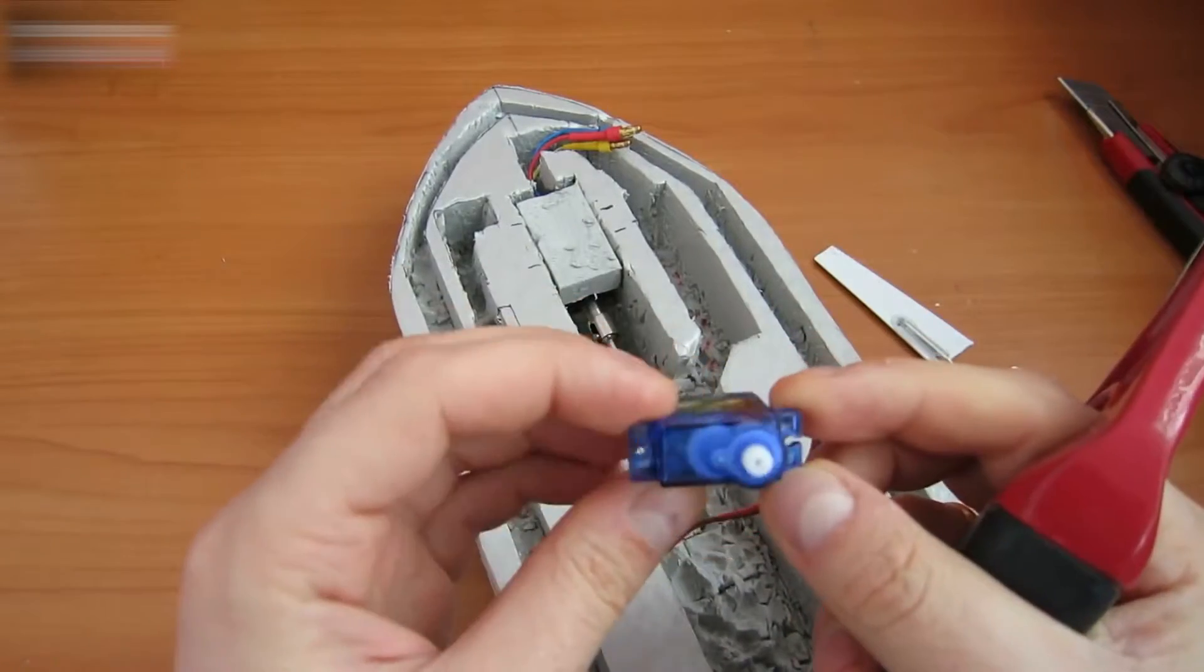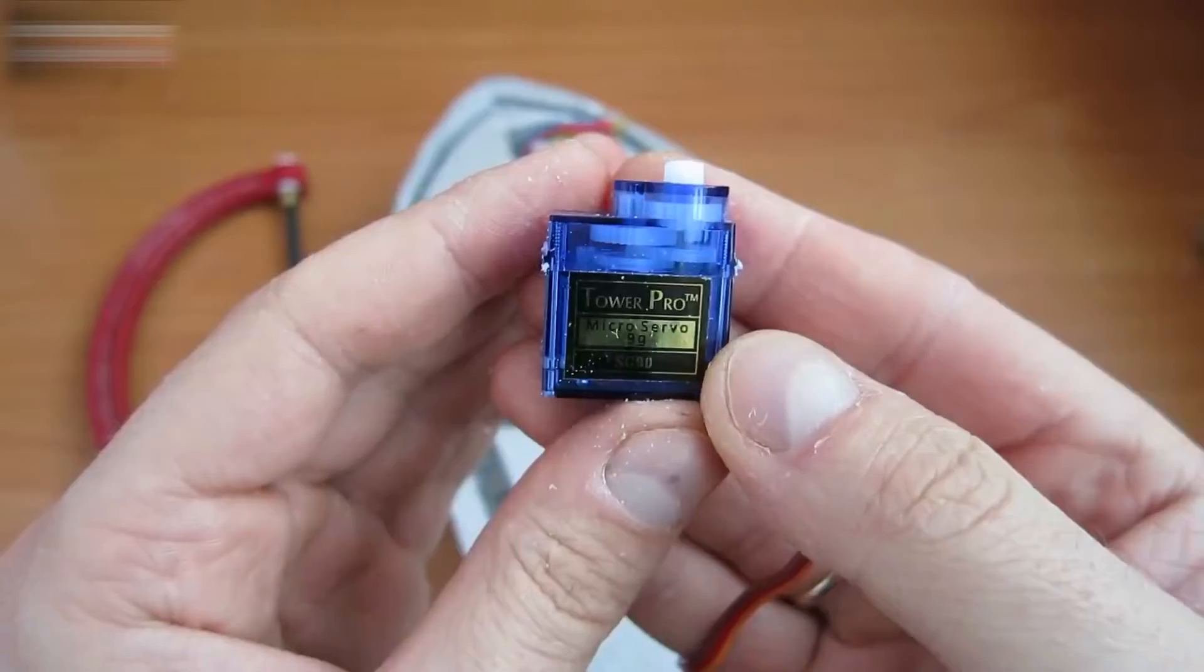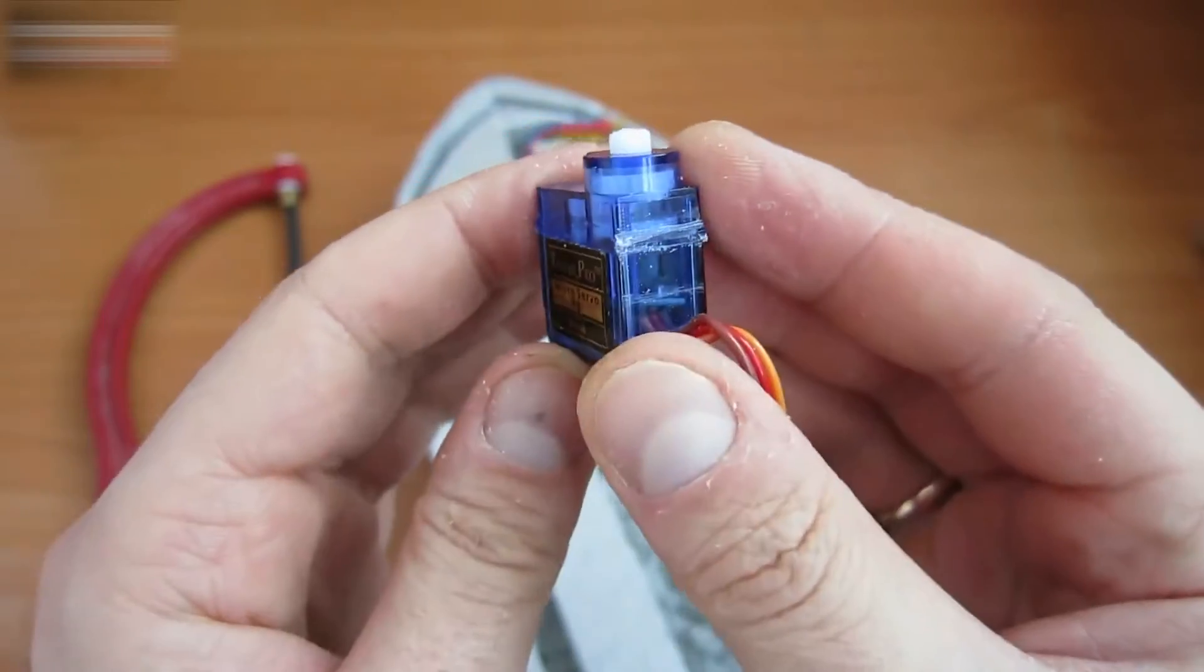The servo fixing lugs must be cut off. I'll do it with a hacksaw. This is how it should look.